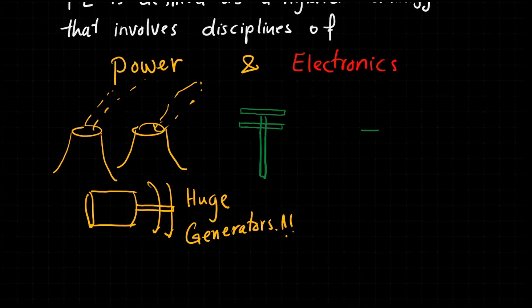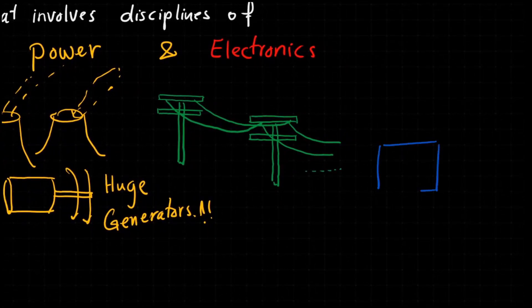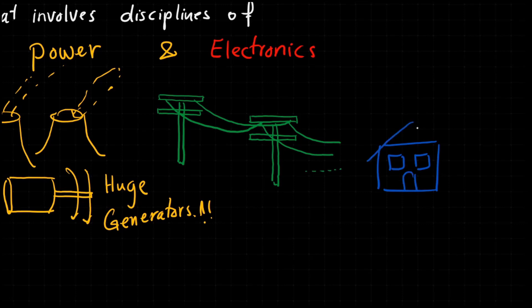This electricity is transmitted through the second part of power system, which is the transmission lines, to supply the third part which is presented in houses, industry, or what we call the loads.